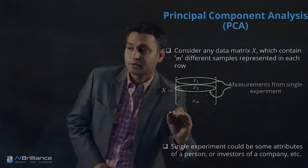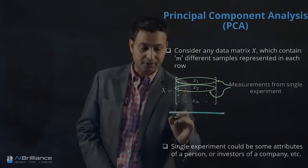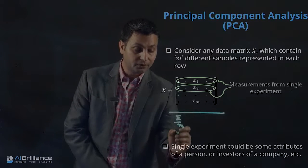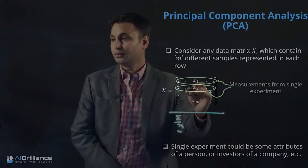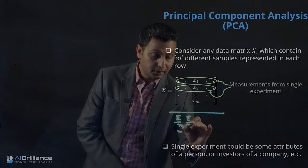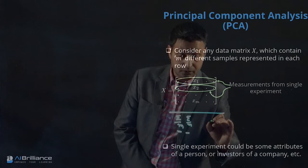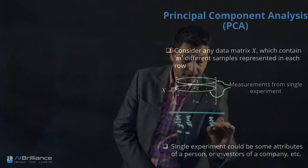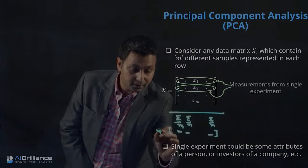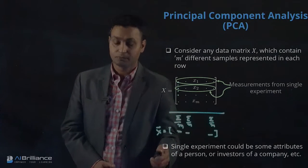We take the X matrix and look at each column. We take the first column, add all the entries, and divide by M to get the first entry of x_mean. Similarly, we take the second column, add all entries, and divide by M for the second entry. For the nth column, we add all entries and divide by M to get the nth element of the mean row vector.